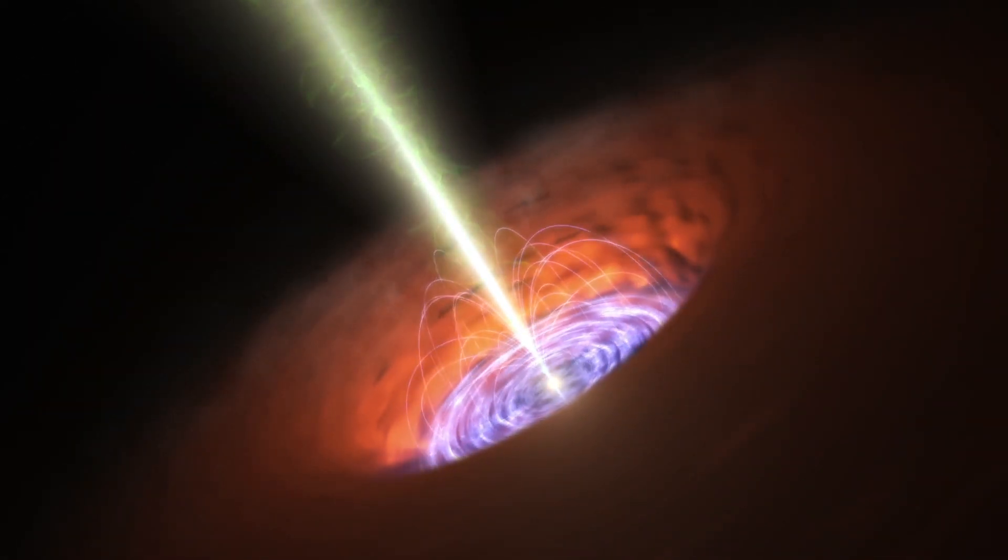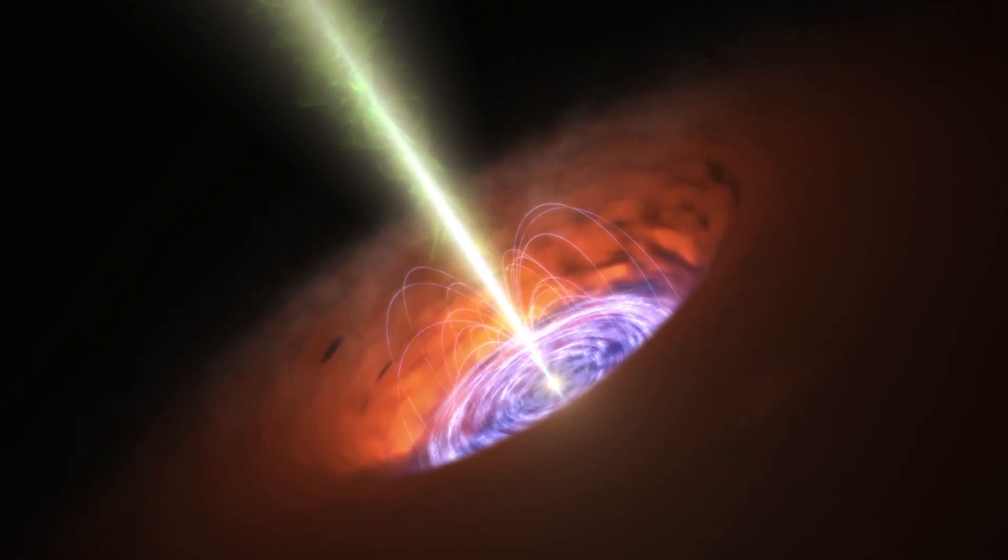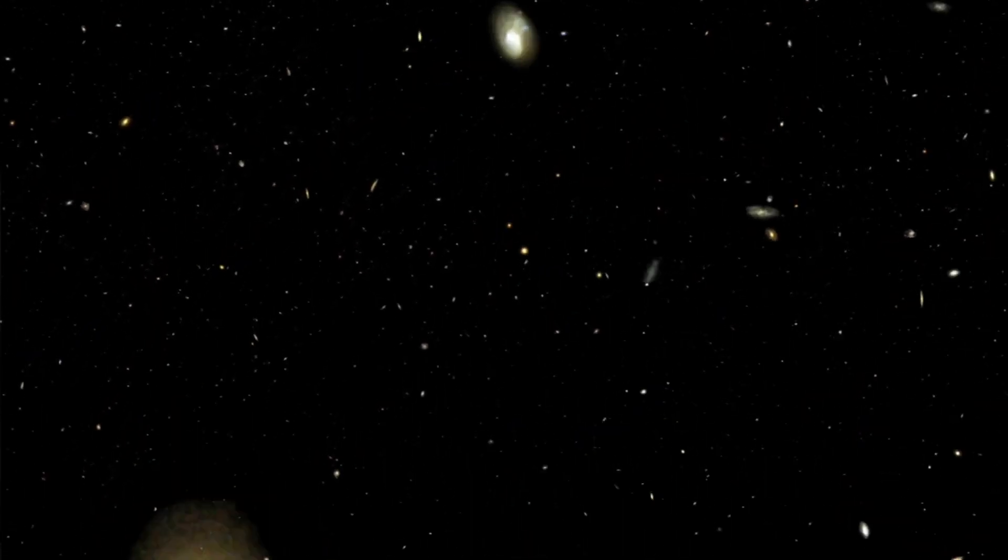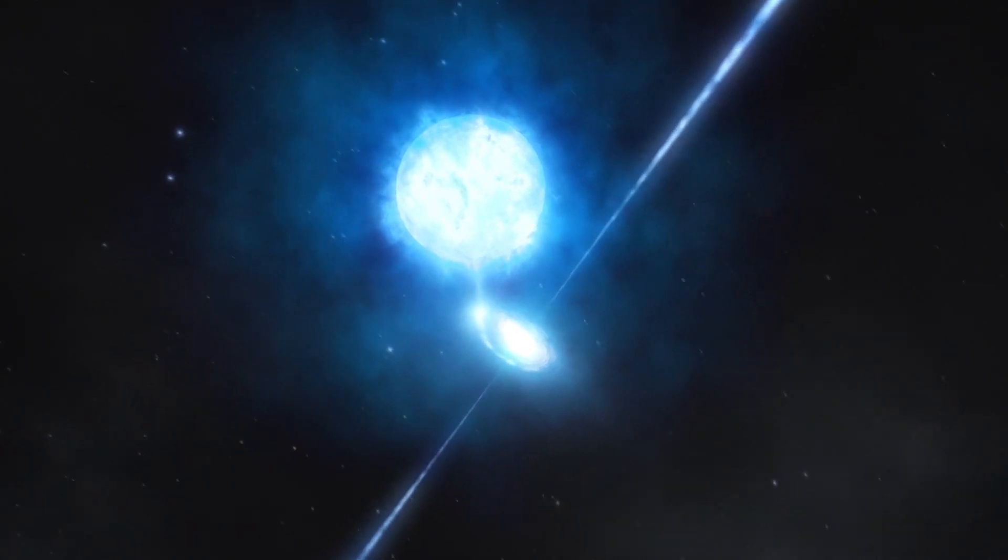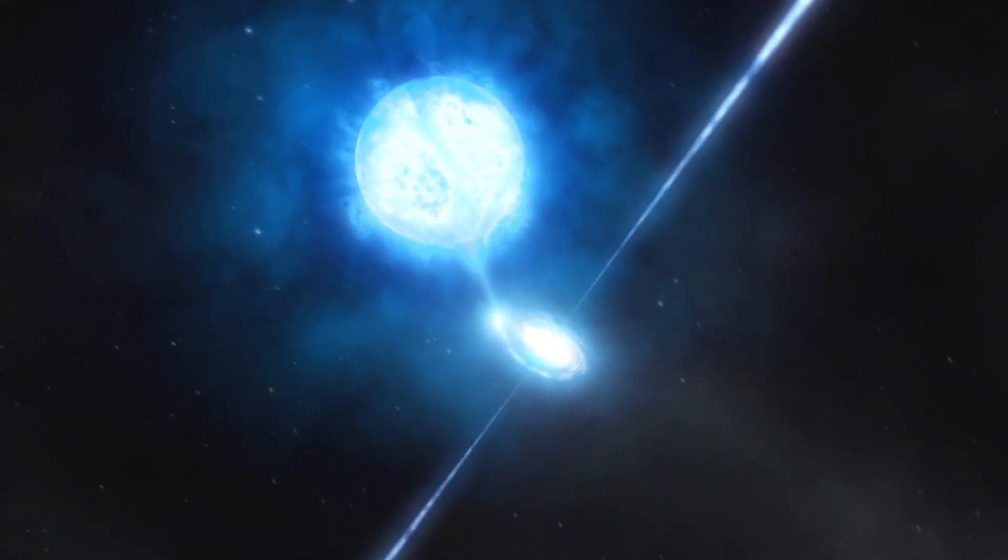So what are the potential dangers posed by neutron stars? The majority of neutron stars are too far from Earth for them to be a direct threat. Yet, if a neutron star were to be close to our solar system, it might end up posing various dangers to Earth.